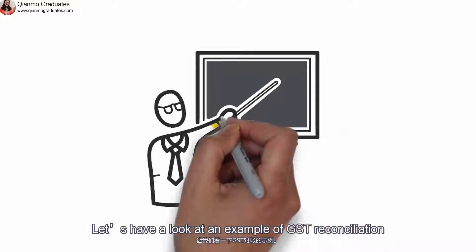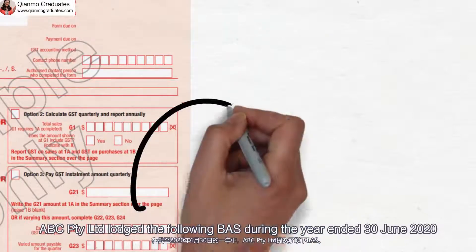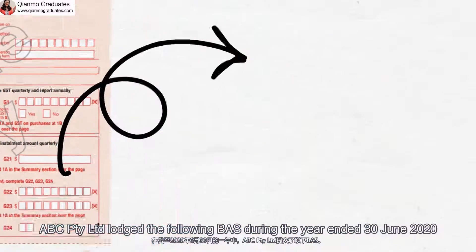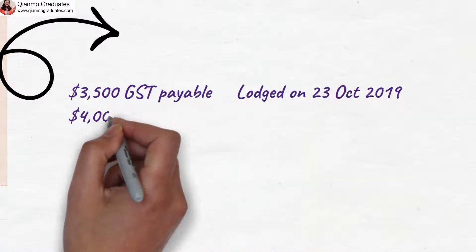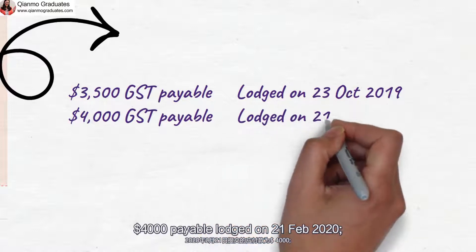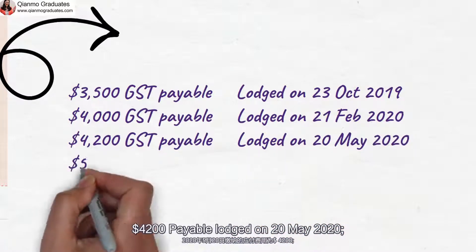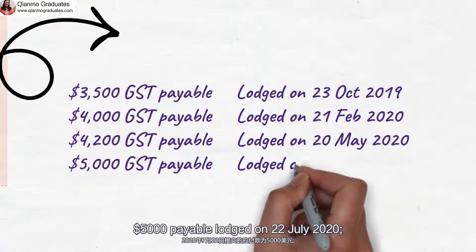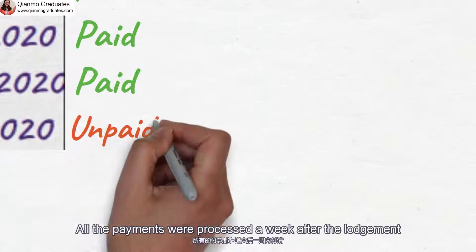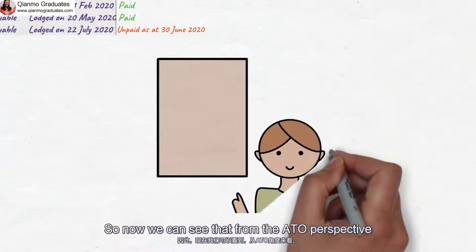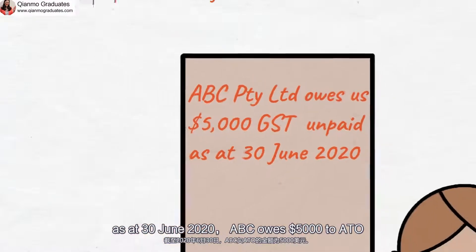Let's have a look at an example of GST reconciliation. ABC P2 Unlimited lodged the following BATS during the year ended 30 June 2020: 3,500 payable lodged on 23 October 2019, 4,000 payable lodged on 21 February 2020, 4,200 payable lodged on 20 May 2020, and 5,000 payable lodged on 22 July 2020. All the payments were processed a week after the lodgement. So now we can see that from the ATO's perspective, as at 30 June 2020, ABC owes $5,000 to ATO.